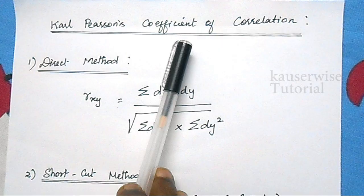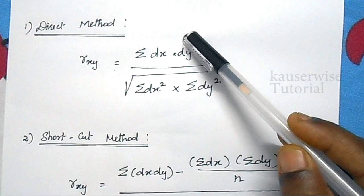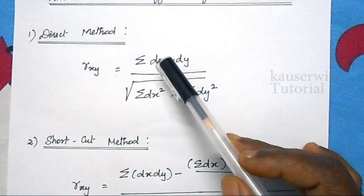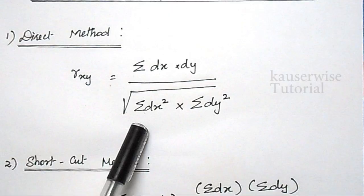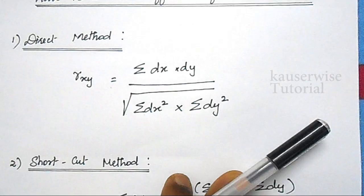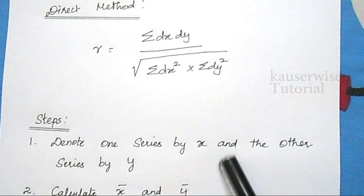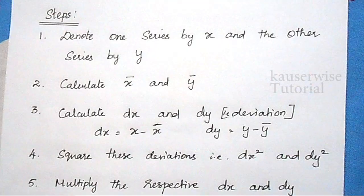In Karl Pearson's coefficient of correlation, there are two methods. The first one is direct method and the second one is shortcut method. We will see them one by one. The formula for the direct method is: R = σdx·dy ÷ √(σdx² × σdy²). In order to proceed with the direct method, we need to follow a few steps. I am going to explain these steps along with the problem.